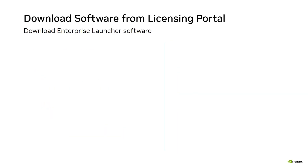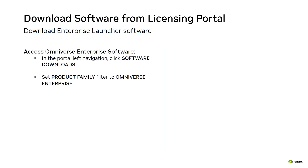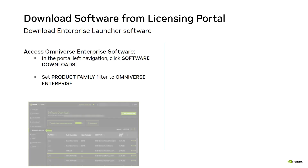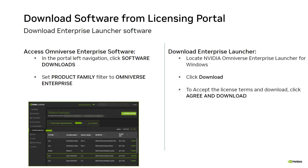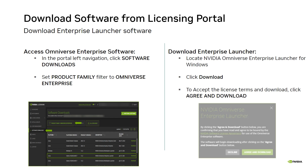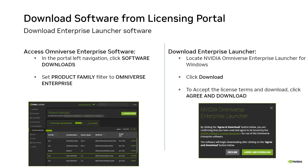To access the Omniverse Enterprise software, from the left navigation click Software Downloads. The Software Downloads page opens. From the Product Family filter, select Omniverse Enterprise — the view updates and displays the Omniverse install artifacts. Next, locate the NVIDIA Omniverse Enterprise Launcher for Windows and click Download. To accept the license terms, click Agree and Download. Now that you've downloaded the Enterprise Launcher to your Windows host, the next task is creating the required directory structure.